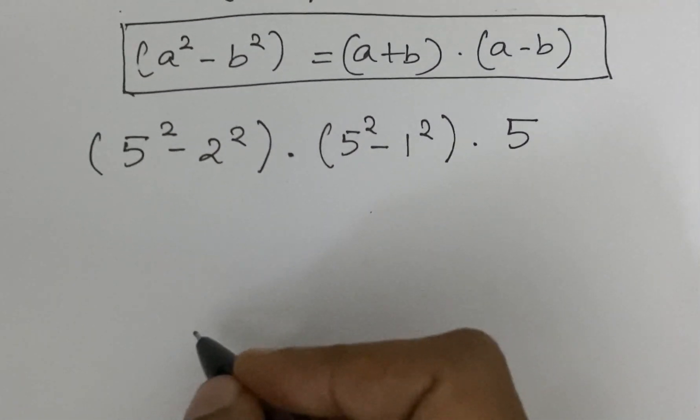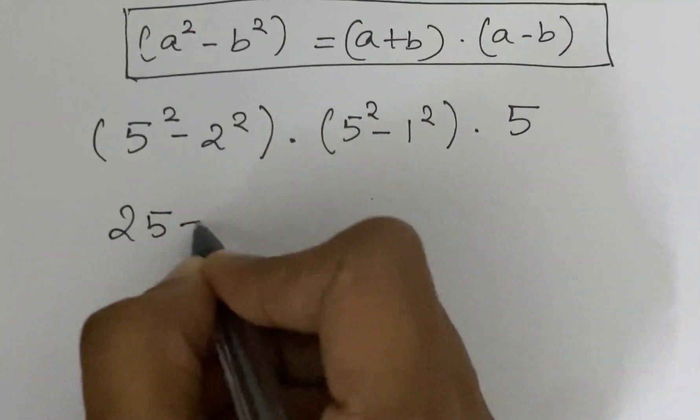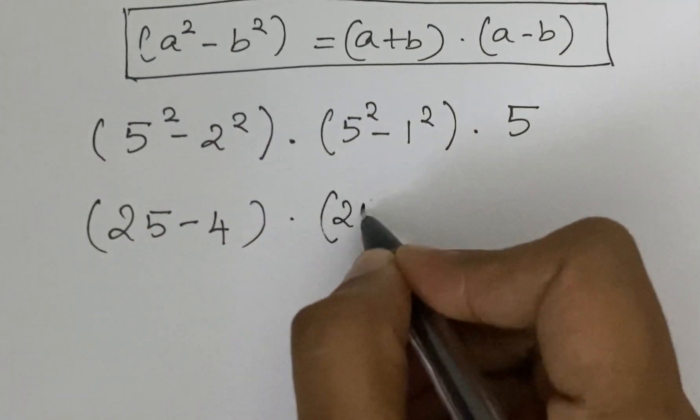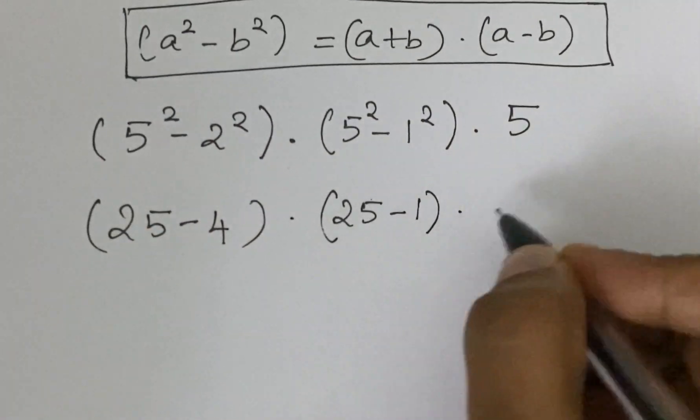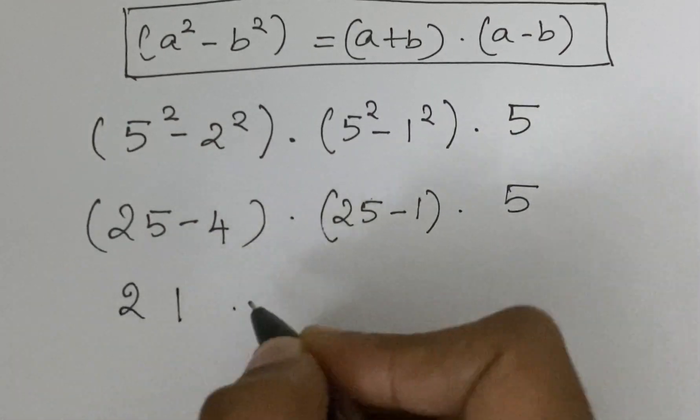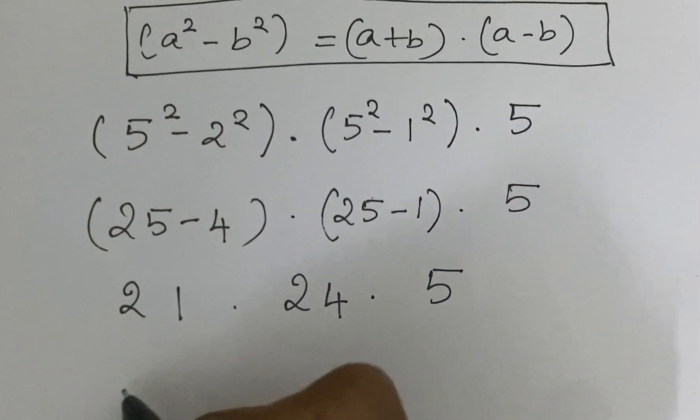We further simplify this. We get 5 square is 25 minus 2 square is 4, times 5 square is 25 minus 1 square, times 5. So 25 minus 4 is 21 times 25 minus 1 is 24 times 5.